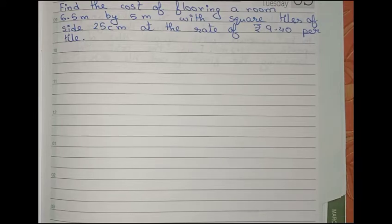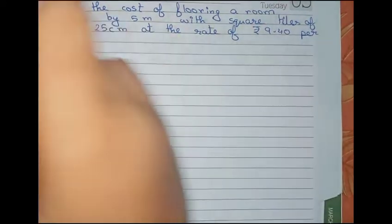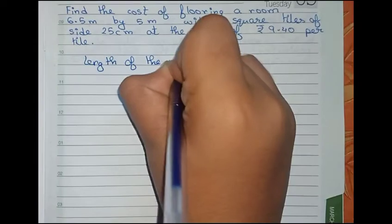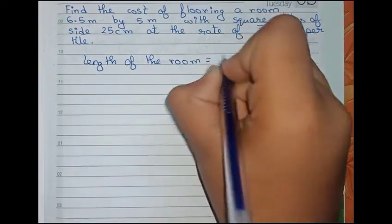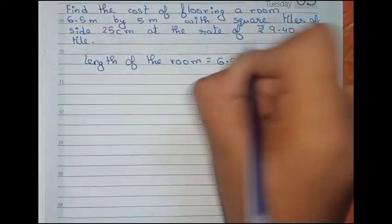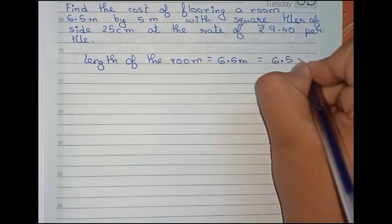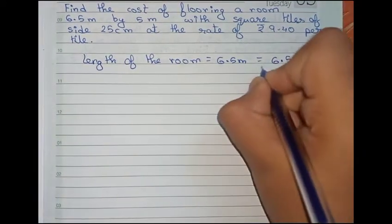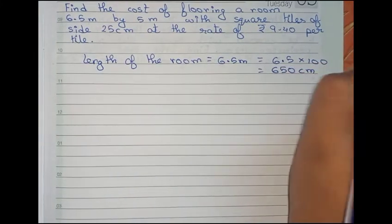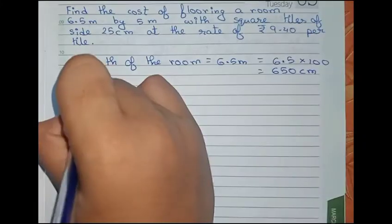So this is our question. Now solve this. First, write the length of the room, which is equal to 6.5 meters. Convert it into centimeters for convenience—it becomes 6.5 into 100, so it becomes 650 centimeters. Now find the breadth of the room.